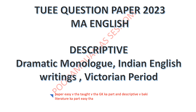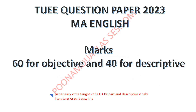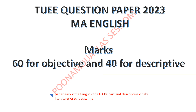In the descriptive part, the topics were dramatic monologue, Indian English writing, and the Victorian period — any one of which you were supposed to write. The marking convention was 60 marks for objective and 40 for descriptive. This much could be recalled from the memory of the aspirants; if anyone knows any other question, please tell me in comments.